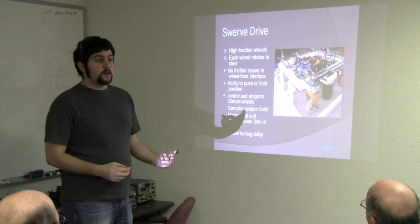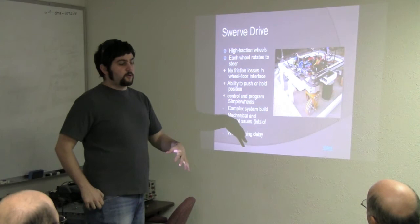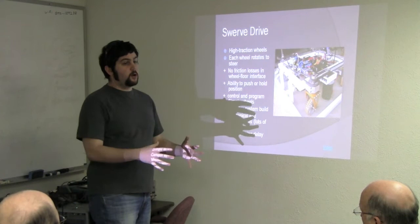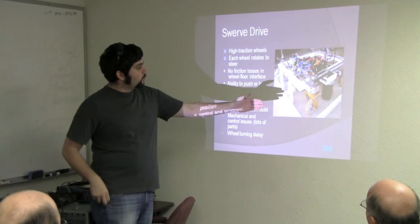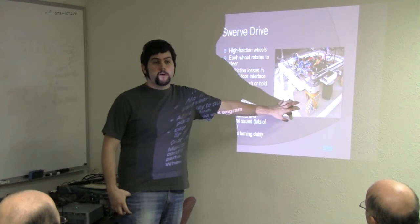The swerve drive is where the individual module rotates about itself, and this is an extremely complex system to build, but if you get it right, it's worth its weight in gold. The main sacrifices with other holonomic drives are your loss of traction and your loss of pushing power because you're basically losing power by moving in alternate directions other than parallel to your wheels. But in this scenario, your wheel is always going to be parallel to the direction that you're moving because the wheel itself rotates.